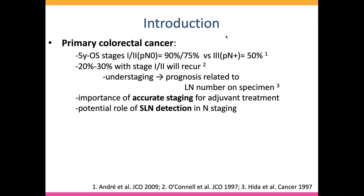As you know, the prognosis of patients with primary colorectal cancer depends on staging, and we also know that about 20 to 30 percent of patients with early stage — stage 1 or stage 2 — will present a recurrence of their disease. It's probably in part related to understaging at the moment of diagnosis, and it has been shown that the prognosis is directly related to the number of lymph nodes analyzed on the operative specimen.